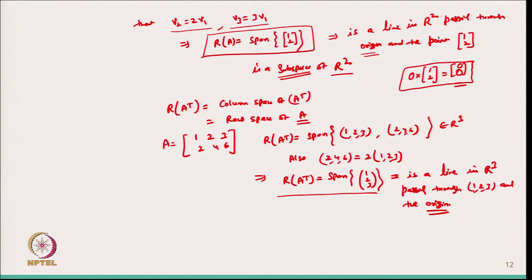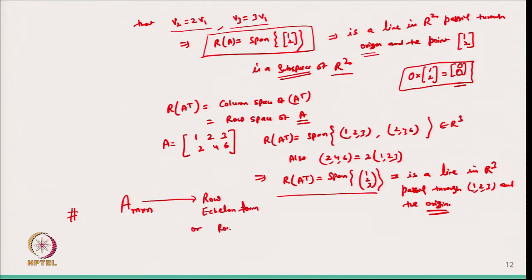Now, given a matrix A of order m×n, we can transform it into what is called the row echelon form or row reduced echelon form. These echelon forms are very important for showing the range space, its dimensions, and related properties. Let us discuss what the row echelon form is.